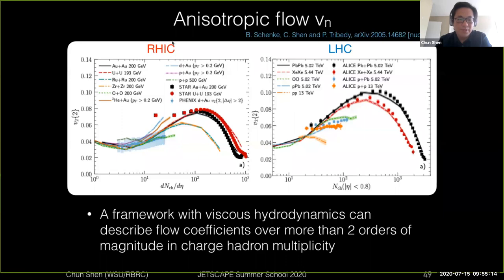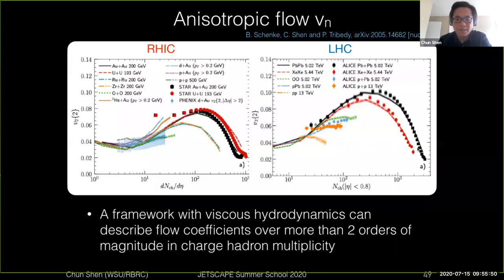You can also look at the elliptic flow coefficients V2 as a function of system size — from bigger systems like uranium-uranium or lead-lead at RHIC and LHC, down to smaller systems like isobar collisions, or very small systems like p+Au and p+p collisions. A uniform framework using one set of transport coefficients can describe a large class of V2 measurements across two orders of magnitude in particle multiplicity, at both RHIC and LHC simultaneously.